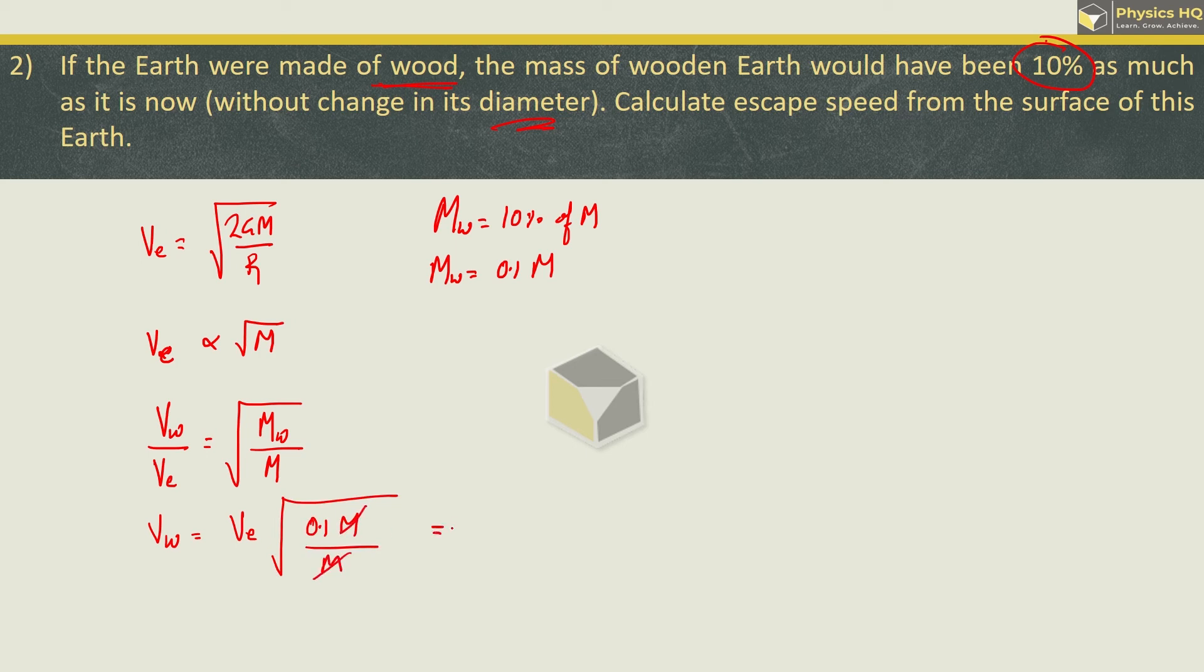Now escape velocity from the surface of the Earth is 11.2 km per second. And this 0.1 under root can be written as 1 by 10. So finally we will have escape velocity for the wooden Earth as 11.2 upon root of 10, giving us 3.54 km per second. If you have any query on how to use logbook, please click on the top right eye icon and check out the video on how to use logbook for solving sums.